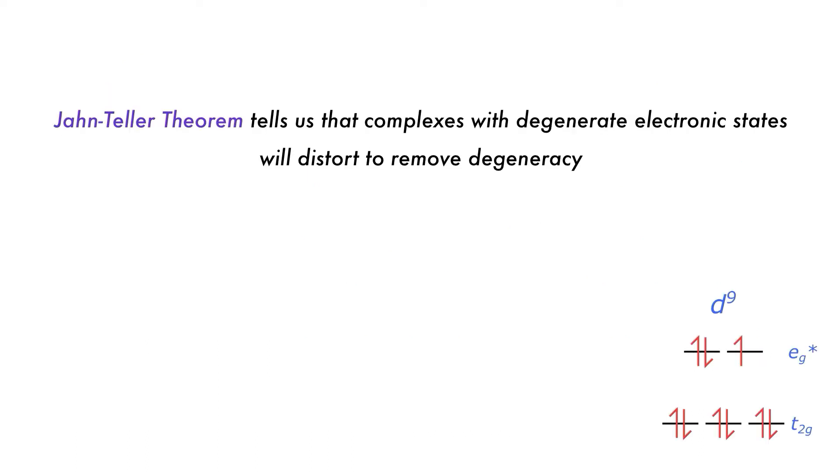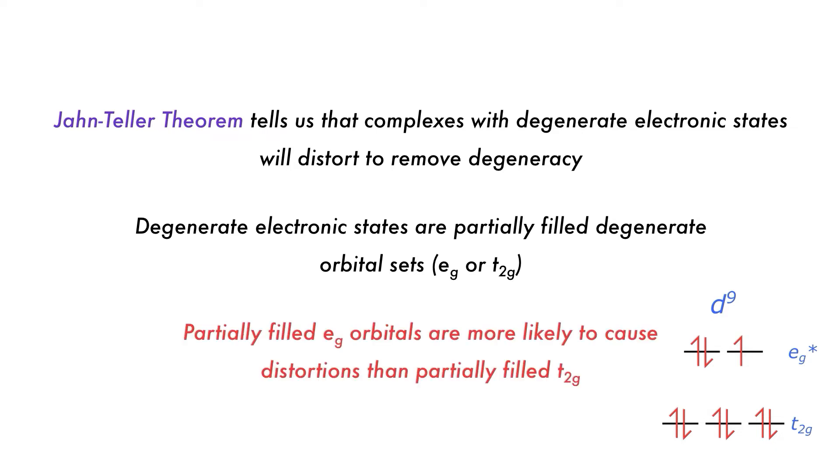The Jahn-Teller theorem tells us that complexes with degenerate electronic states will distort to remove this degeneracy. Degenerate electronic states are partially filled degenerate orbital sets, for example the Eg or T2g. They are not partially filled orbitals. Partially filled Eg orbitals are more likely to cause distortions than partially filled T2g sets.